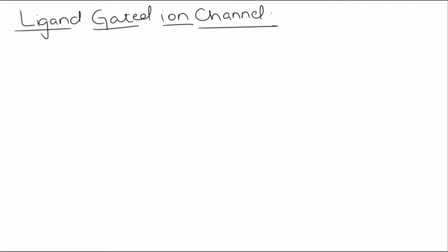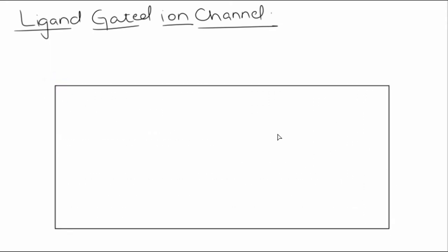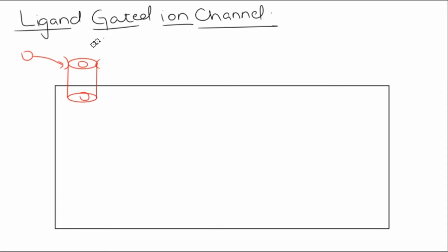Consider this to be our cell. On this cell, there is a first type of ion channel. This ion channel has specific pockets, which are basically the ligand binding domains. Whenever a particular ligand binds on it, this channel will open, leading to the influx or efflux of cations or anions. This first class is called ligand gated ion channels.